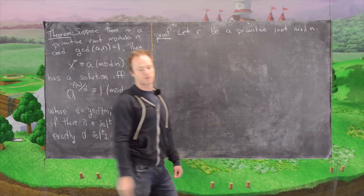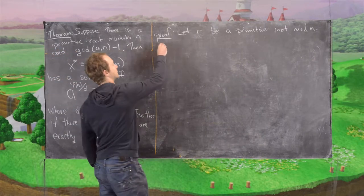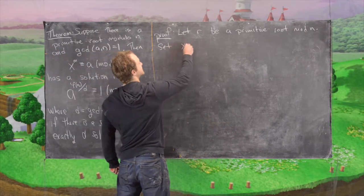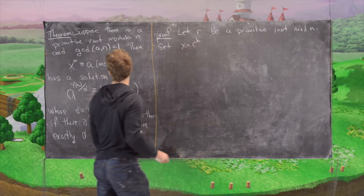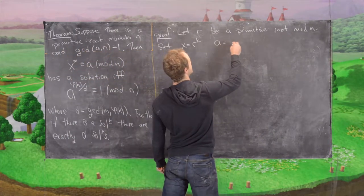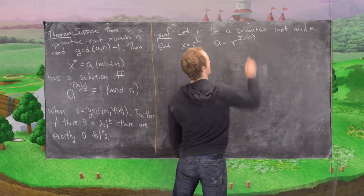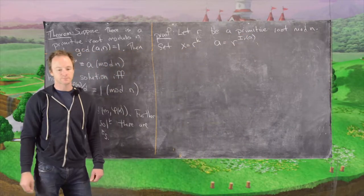We assume that such a primitive root exists, then set x equal to r to the k, and a equals r to the index of a.